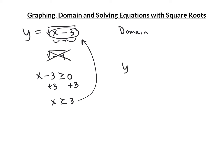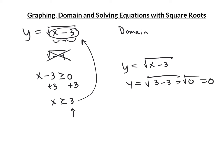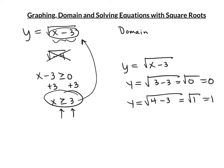Think about that. y equals the square root of x minus 3. If I pick 3, y would be the square root of 3 minus 3, which would be the square root of 0, which would be 0. And if I pick any value greater than 3, like 4, y would be equal to the square root of 4 minus 3, which is the square root of 1, which is 1. As long as my values are greater than or equal to 3, I get an answer that will work in this equation.